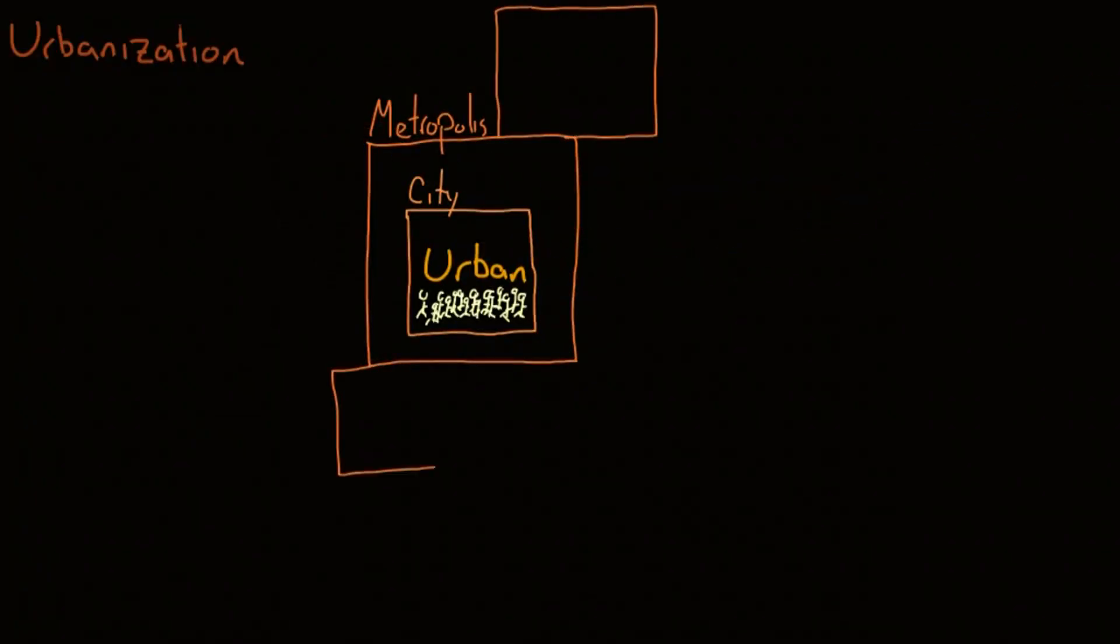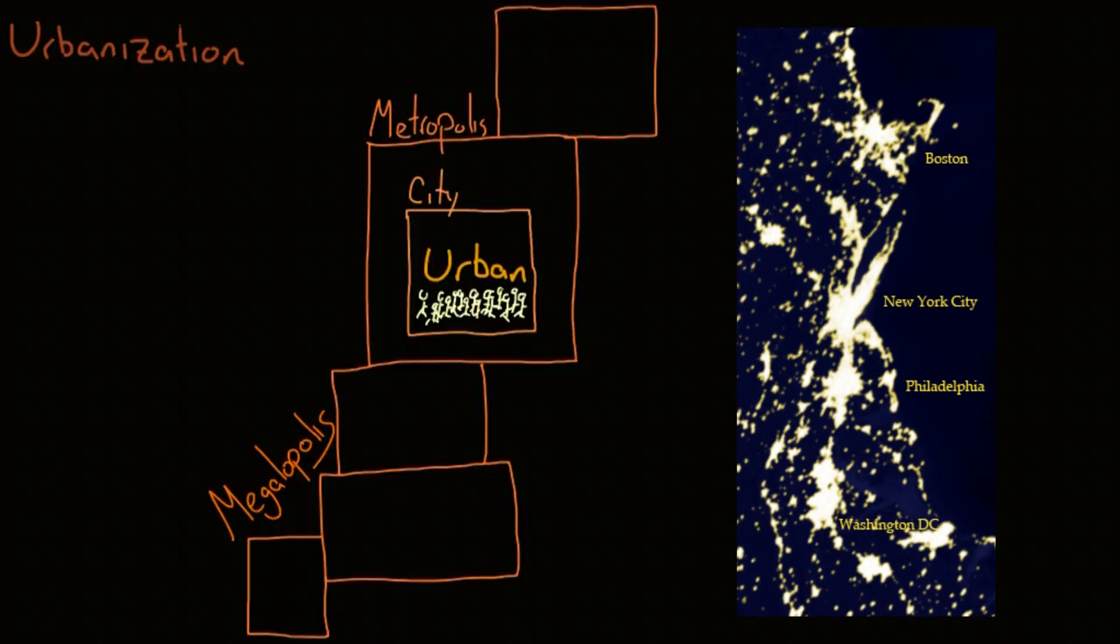Then if you get a bunch of metropolises that are all connected and grown into each other, that's called a megalopolis or a megacity. There's a megalopolis that includes New York City, running from Boston to Washington, D.C., that has over 44 million people living in this sprawling urban complex.